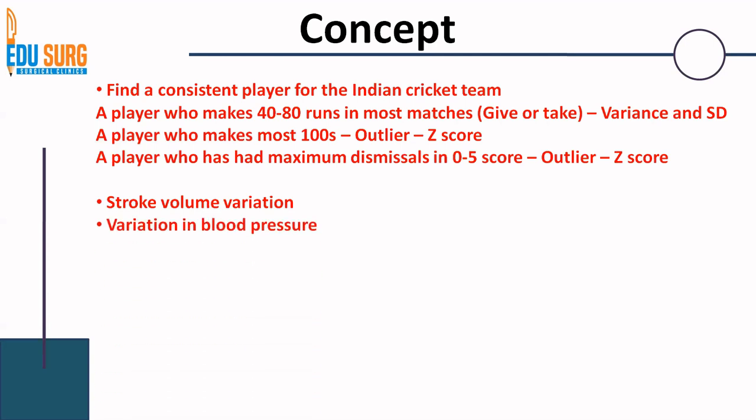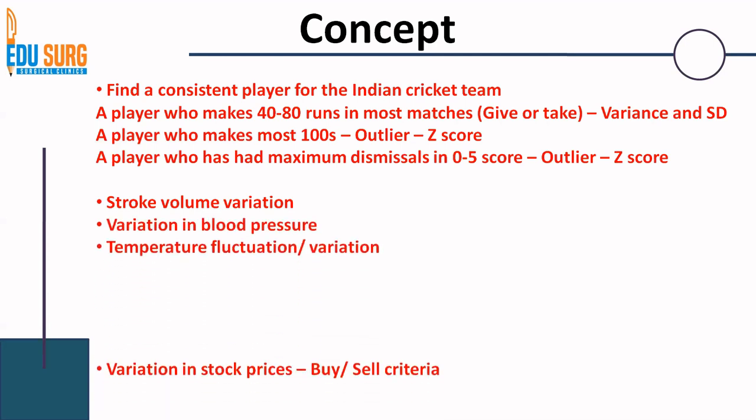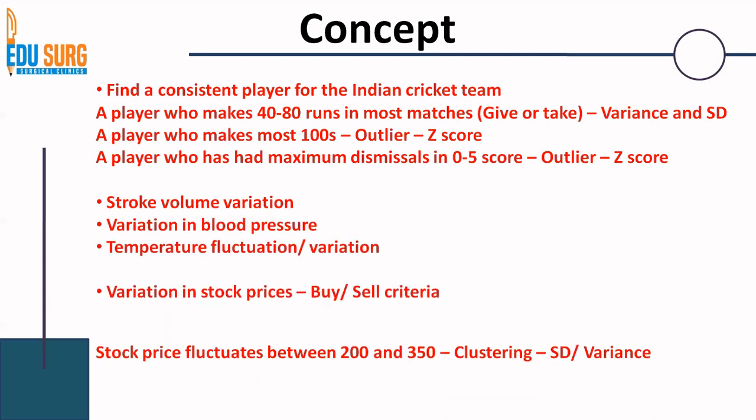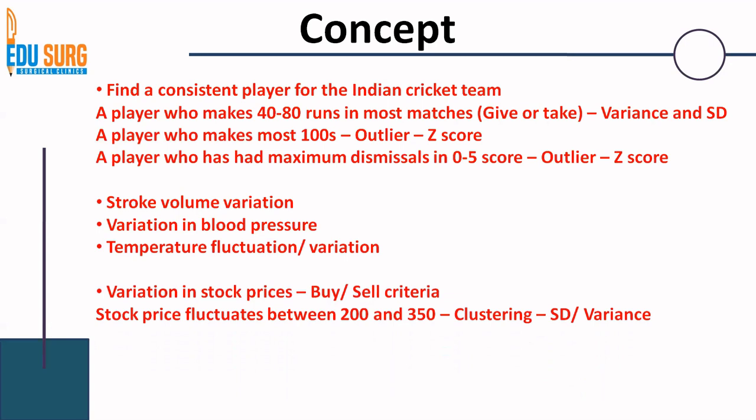Similarly, this applies to stroke volume variation, blood pressure, temperature fluctuation, and stock price variation. For example, a stock fluctuating between 200 and 350 rupees — if it falls to 150 you may sell, or if it goes above 350 you may also look to sell, because its usual range is 200 to 350. This again uses the same statistical concepts.